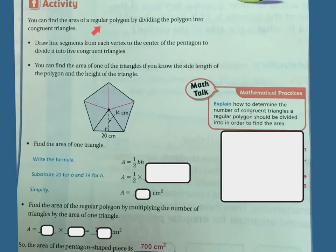You can find the area of a regular polygon by dividing the polygon into congruent triangles. Draw line segments from each vertex to the center of the pentagon to divide it into five congruent triangles. You can find the area of one of the triangles if you know the side length of the polygon and the height of the triangle.